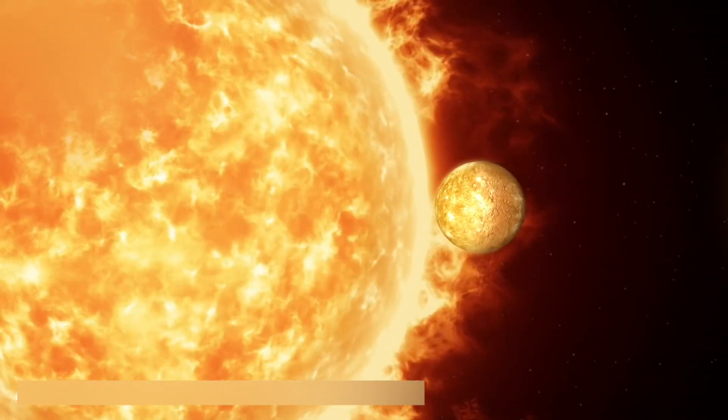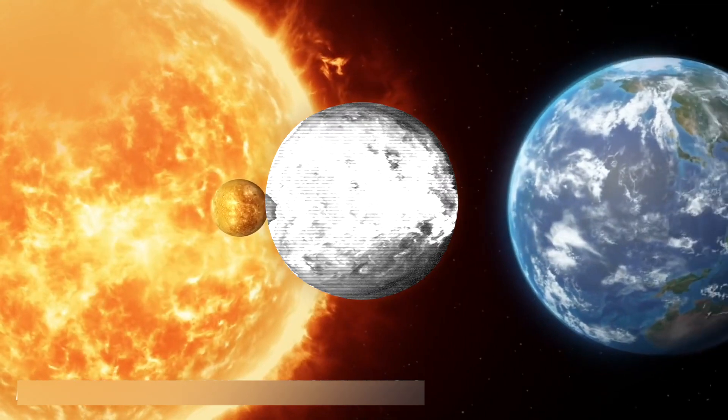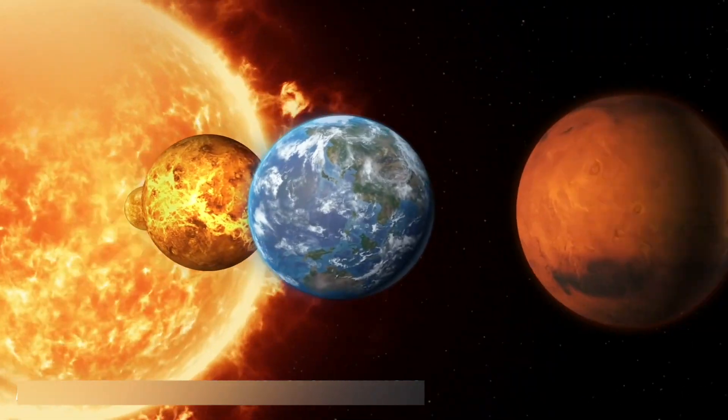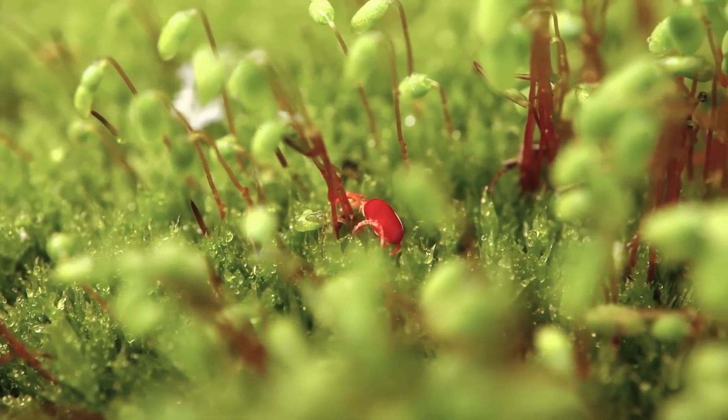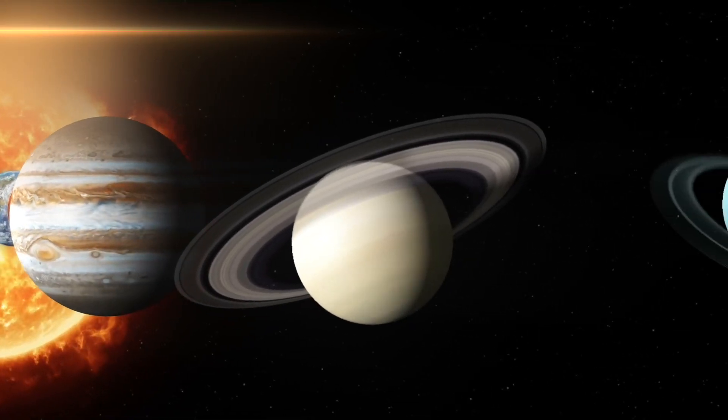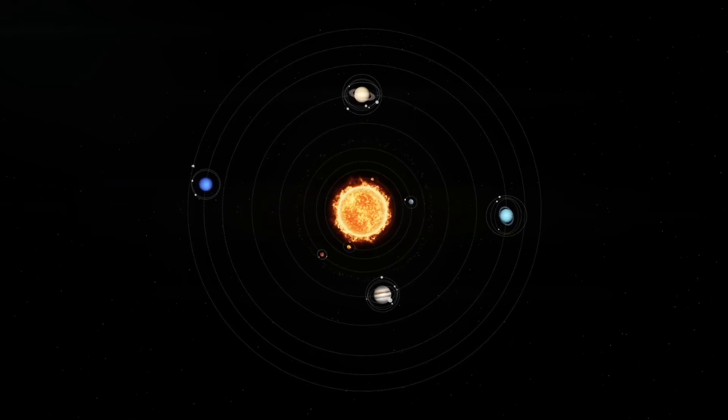In our solar system, there are four planets with solid, rocky surfaces: Mercury, Venus, Earth, and Mars. Of these, only one is capable of supporting life as we know it. The rest lie outside our star's habitable zone, so they are either far too hot or far too cold.